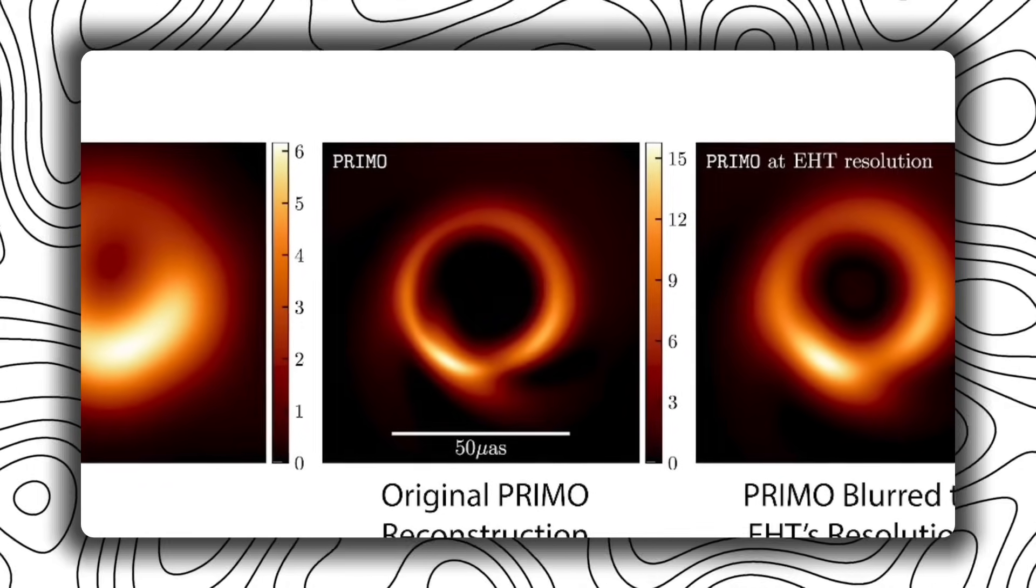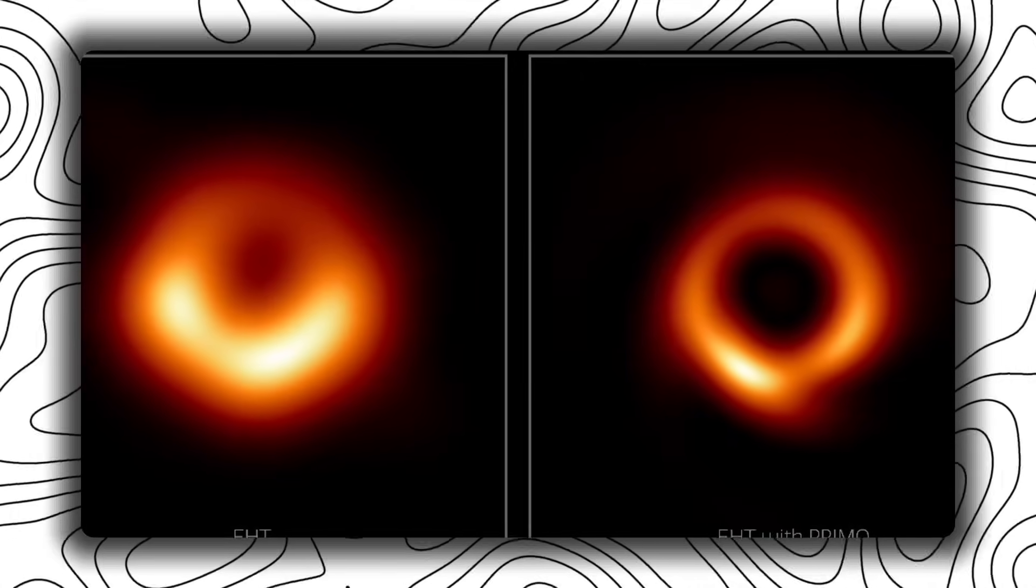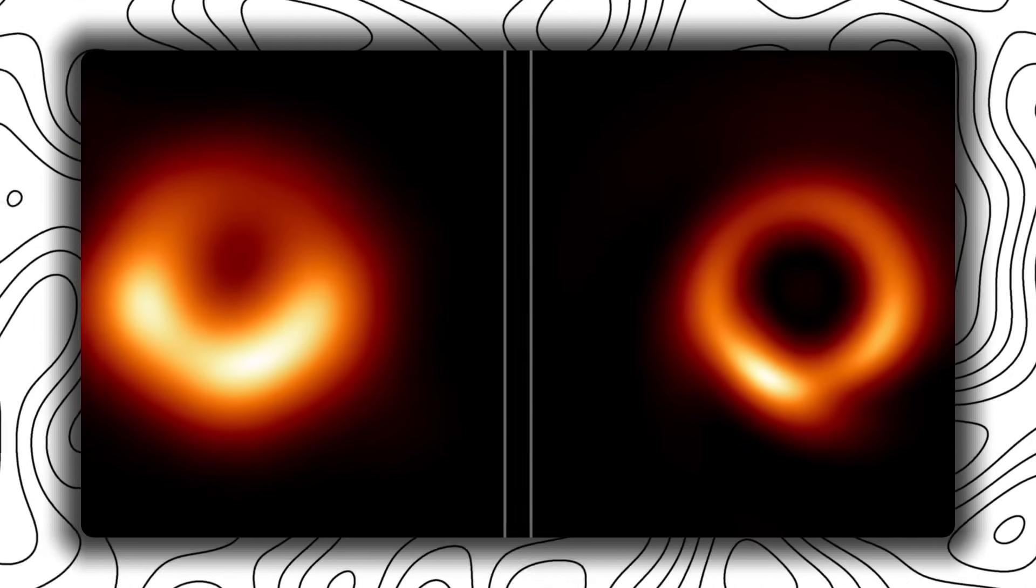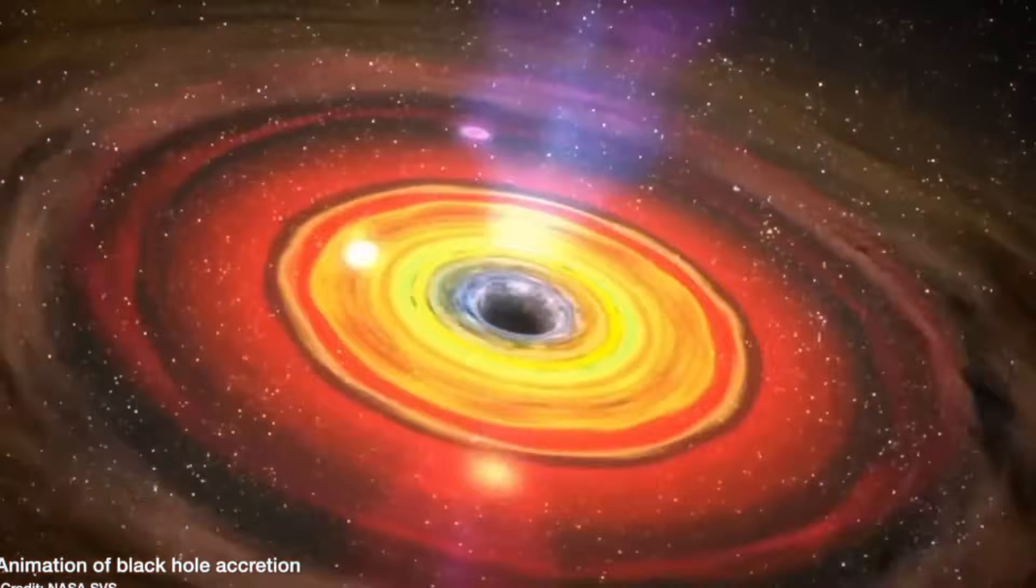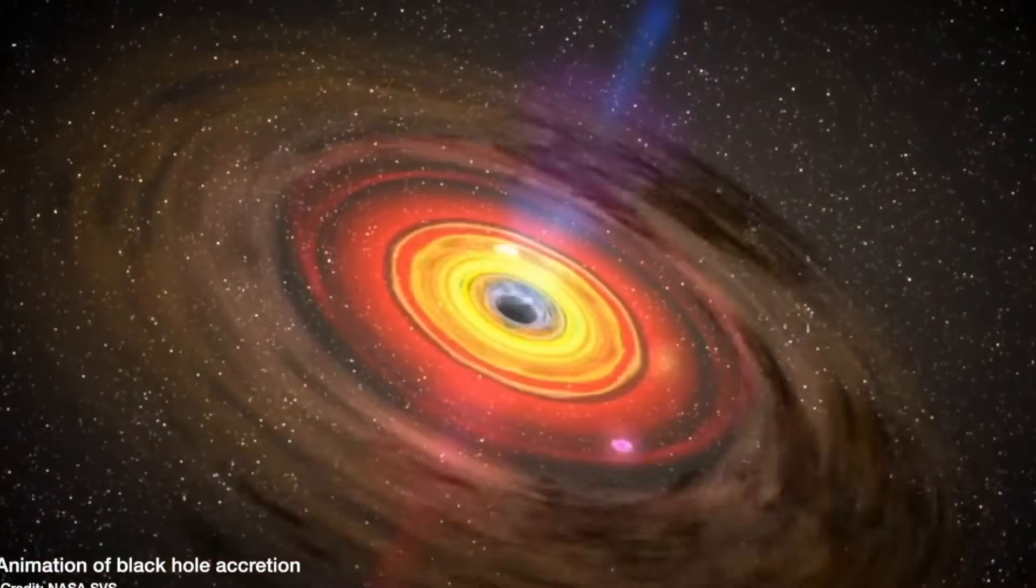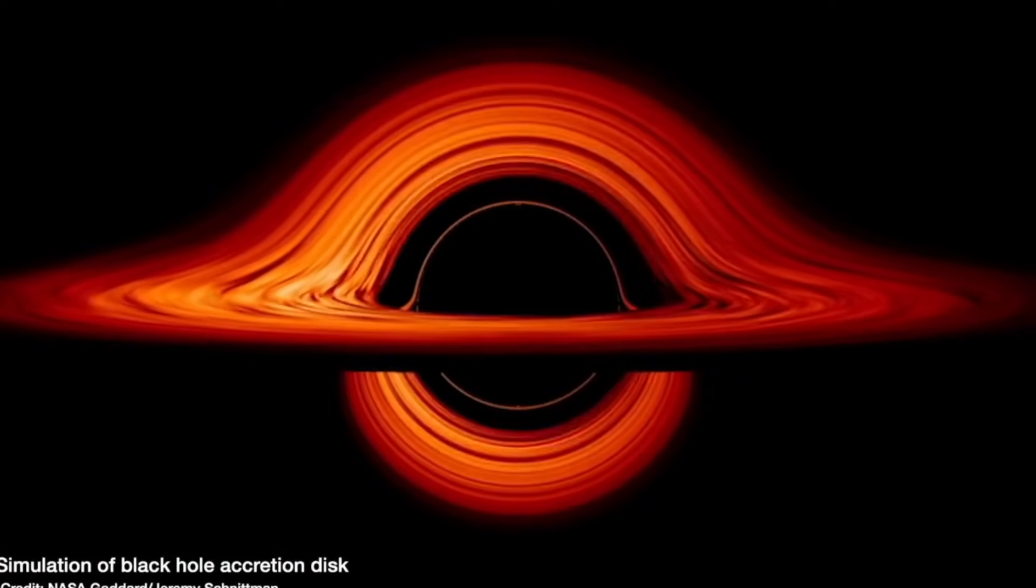An image mapping the behavior of information as it approaches and crosses an event horizon. What you're seeing: concentric rings of data, each ring a snapshot of how quantum bits of information scramble,